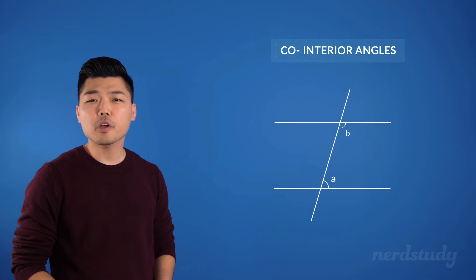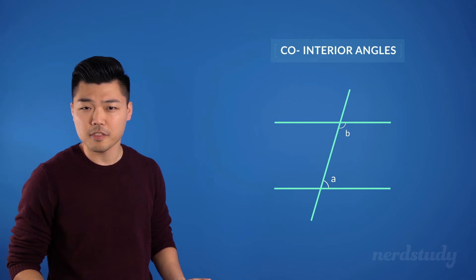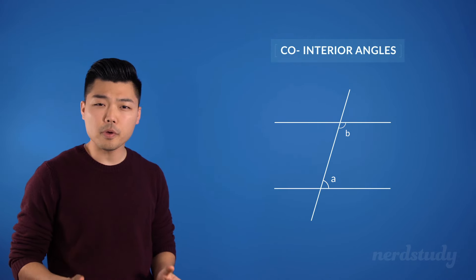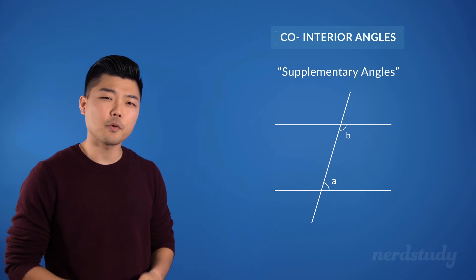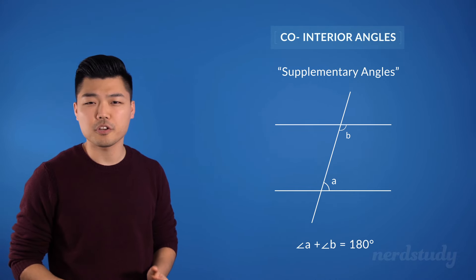Also, if we're working with two parallel lines and a slant, like this example, then the co-interior angles are always supplementary angles, in that they will add up to become 180 degrees.